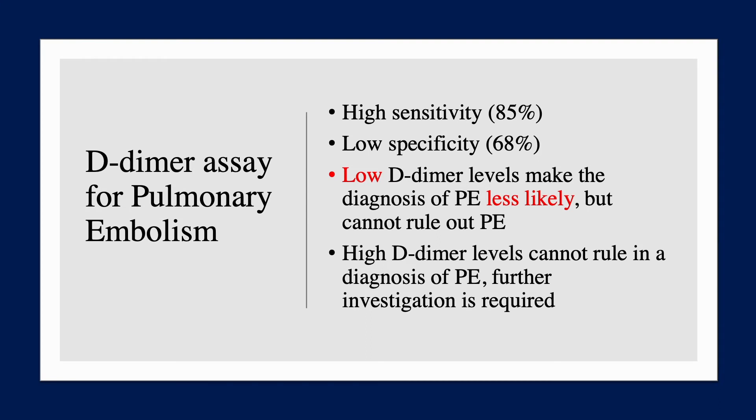Example: the D-dimer assay for pulmonary embolism. It has a high sensitivity of 85% with a low specificity of 68%. Therefore, a low D-dimer level makes the diagnosis of a PE less likely, but cannot rule out a PE. However, a high D-dimer level cannot rule in the diagnosis of a PE — further investigation is required, such as a CTPA.